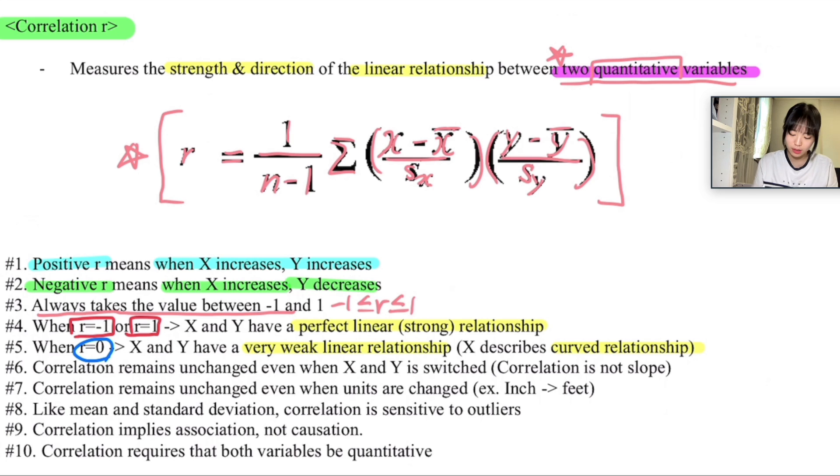And also this comes a tricky part, but it's not that tricky if you understand it. Correlation r remains unchanged even when x and y are switched, and this is because correlation is not the slope. Like we get the slope by calculating the change in y over change in x, right? When x and y change over here, the slope is of course going to change because the denominator and numerator will be changed, but because correlation is not slope, you're going to say that correlation does not change even when the x and y values are changed.